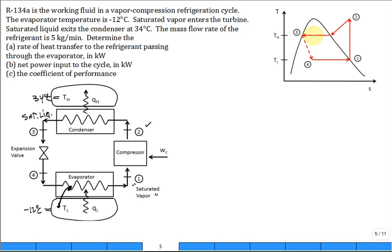The temperature at state 2 is higher than 34 because it's superheated. You can see that on the T-S diagram. It's very hot.